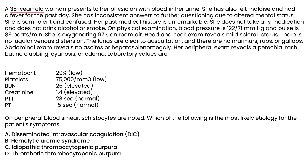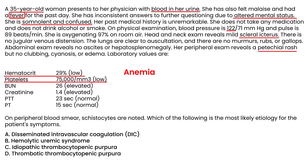Clinical vignette: A 35-year-old woman presents with blood in her urine, malaise, and fever for the past day. She gives inconsistent answers due to altered mental status — she is somnolent and confused. Physical exam reveals mild scleral icterus and a petechial rash. Lab values show anemia, low platelet count, elevated BUN and creatinine, and the peripheral blood smear shows schistocytes.